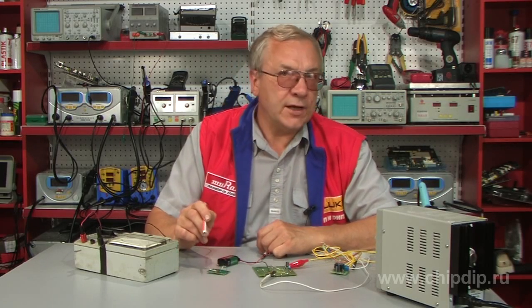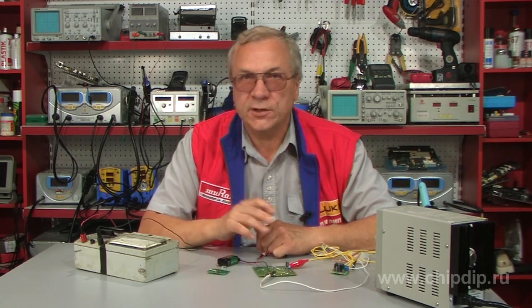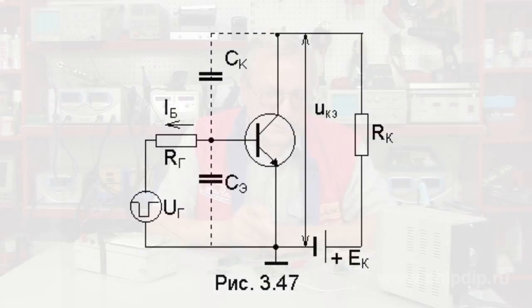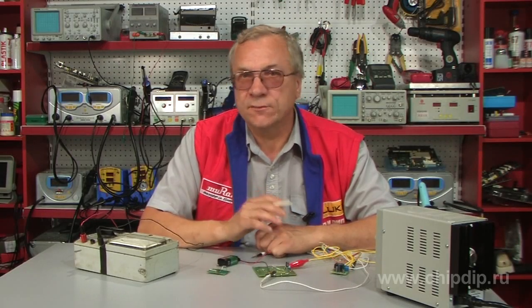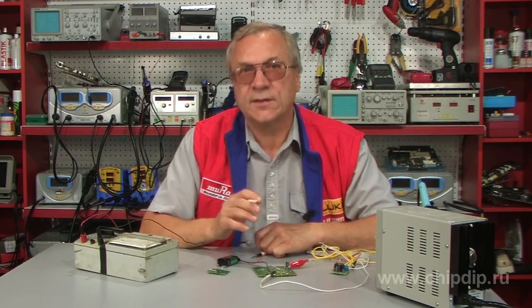A transistor switch is used for switching load circuits under the influence of external control signals. A transistor switch can stay in one of its static modes: the transistor is closed in cut-off mode, and in saturation mode, the transistor is open and saturated.